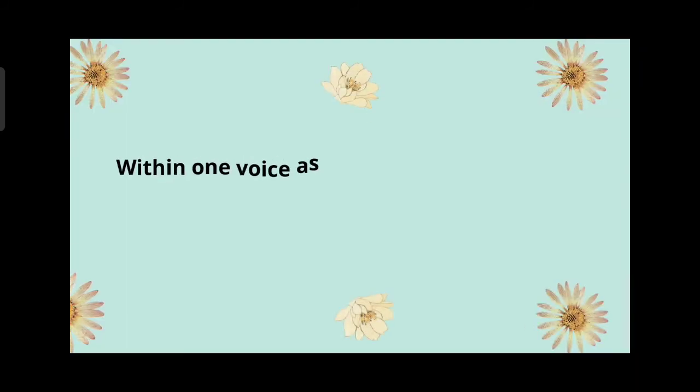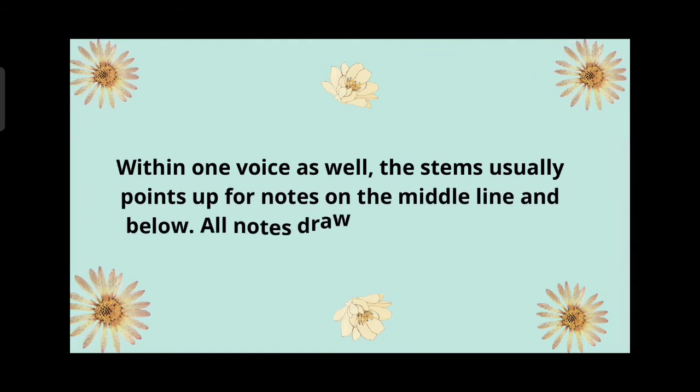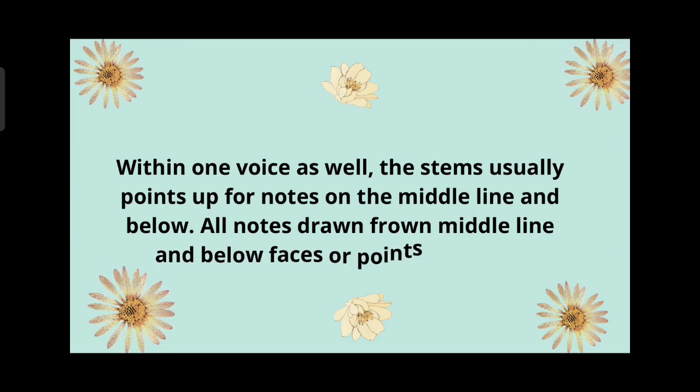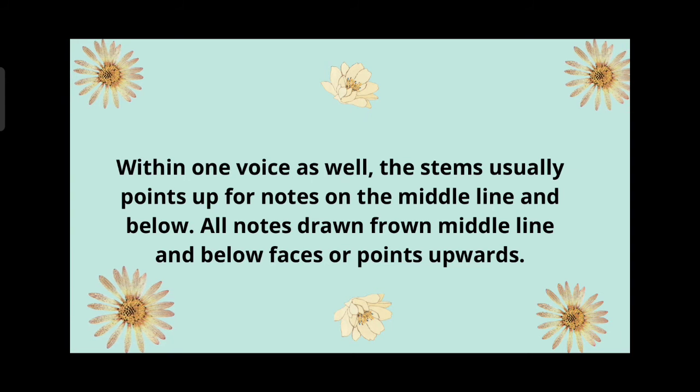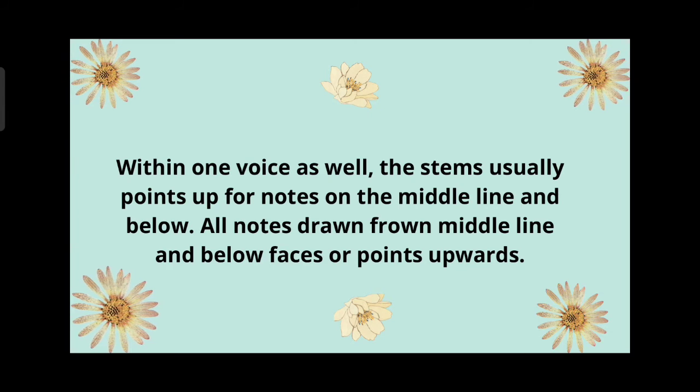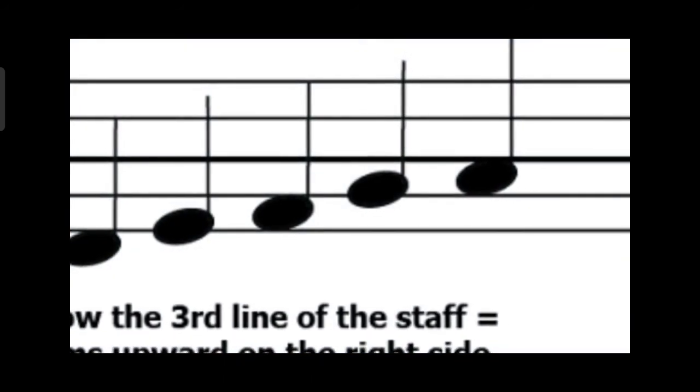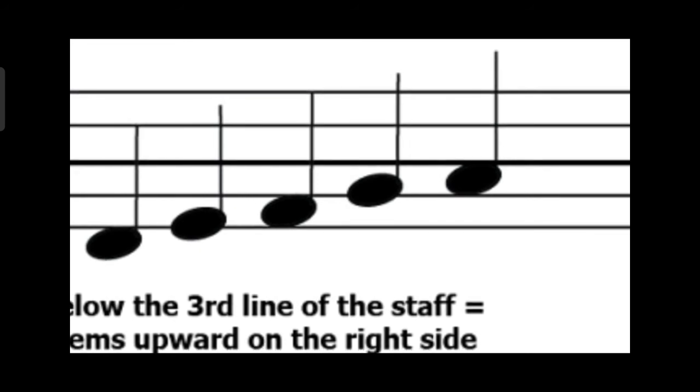Within one voice as well, the stems usually point up for notes on the middle line and below. All notes drawn from middle line and below face or point upwards. Don't forget that: line three and above, all the stems come downward, but line three and below, all the stems point upward. Can you see this? I hope you can differentiate between the two.